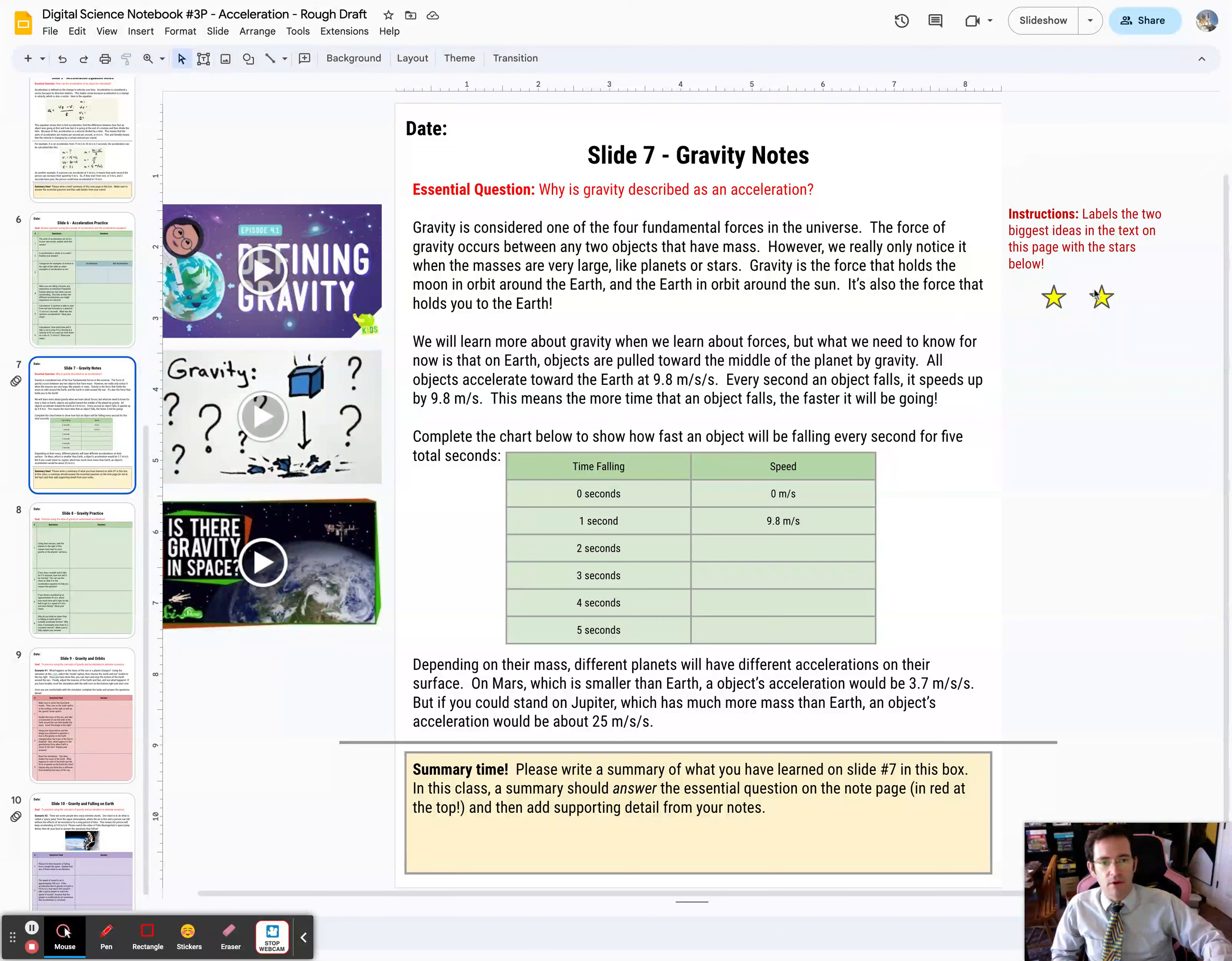So your job is to read through the text, mark the two biggest ideas with the stars, and then fill in this chart where you're thinking about how quickly will an object be moving after every second that it falls on Earth.